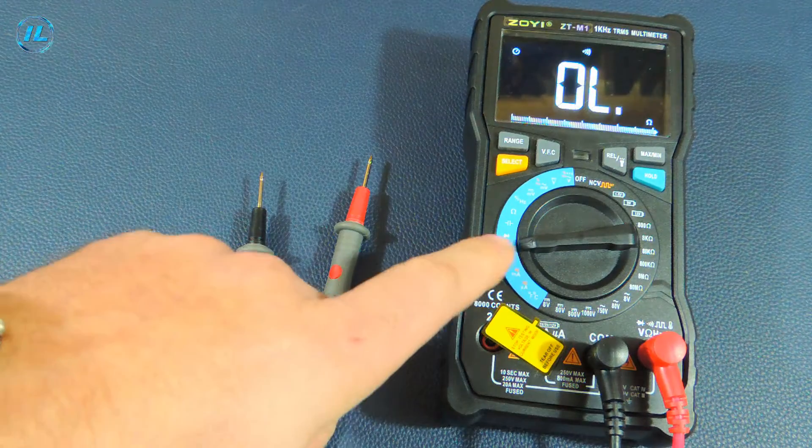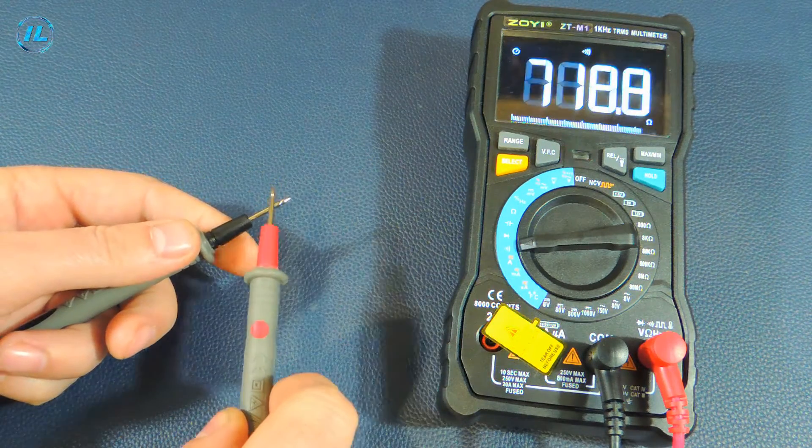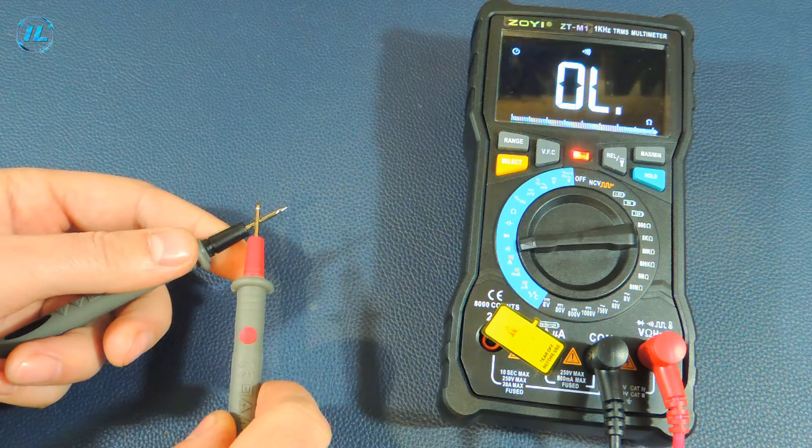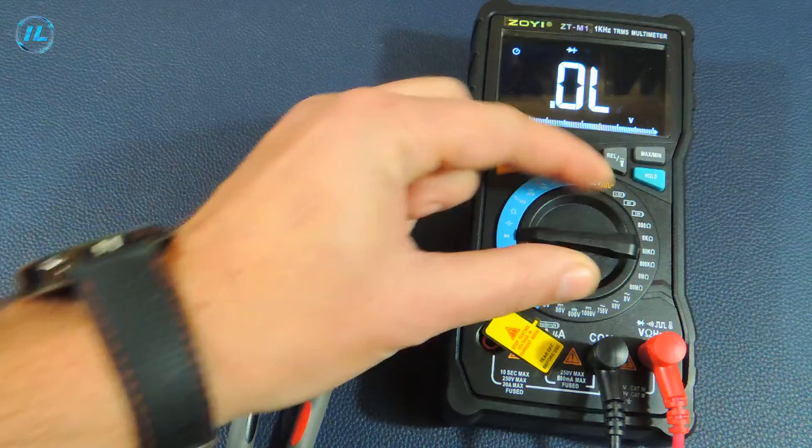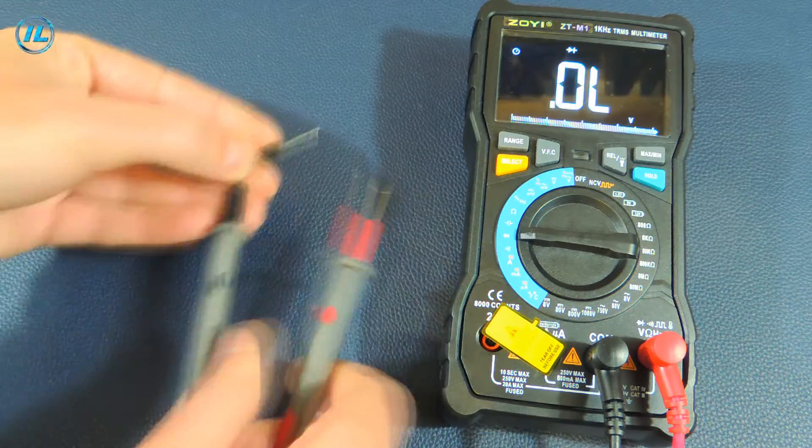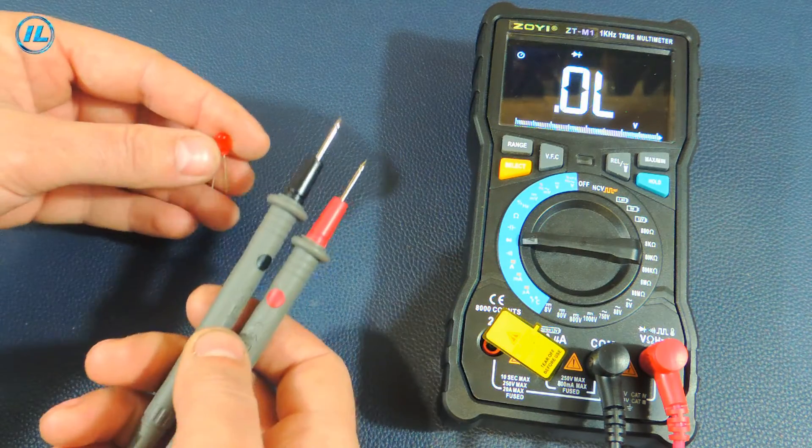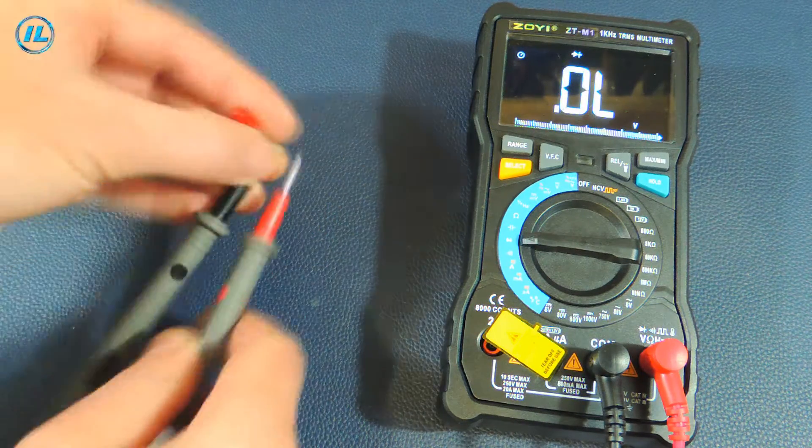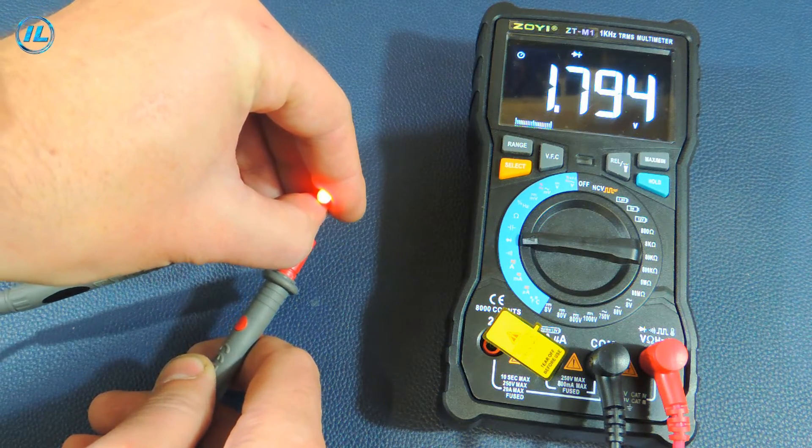The next point is to check the electrical circuit and sound the alarm. Next, check the diodes. With this multimeter, you can also check the LEDs. The voltage on the probes is 3 volts. The voltage drop on the red LED is 1.79 volts.